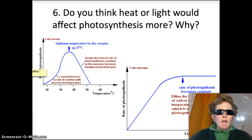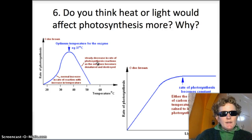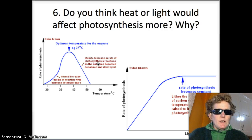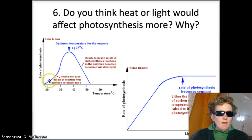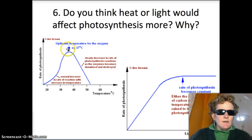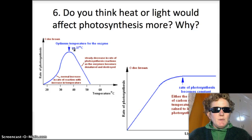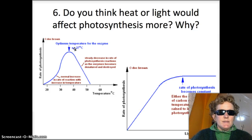So for number six, let's talk about whether heat or light would affect photosynthesis more. And it turns out this isn't a simple question. It depends on where you are, what the temperature is, and what the light is. You can see in this graph of temperature versus rate of photosynthesis. If you add more heat at certain temperatures the rate of photosynthesis increases and it peaks out about 38 degrees Celsius or 37 degrees Celsius, which just happens to be our body temperature 98.6.